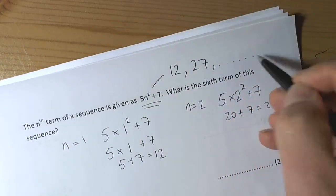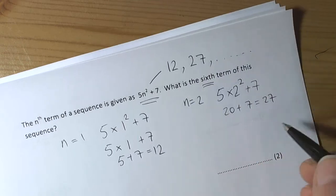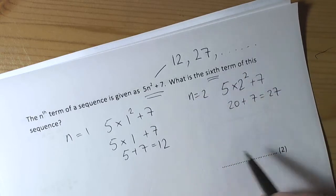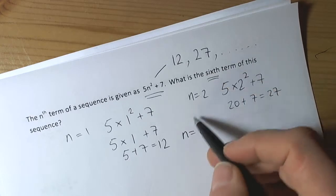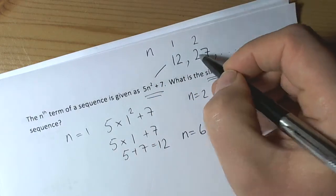What the question is asking us is to carry on working through until we get to the 6th term. So we don't have to do the 3, 4, 5 and all the rest of it, but it's just literally asking us for the 6th term. So the 6th term tells me that n will be 6. It's the 6th value along. n is the term number. The first term is 12, the second term is 27.